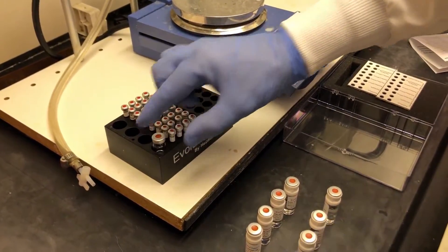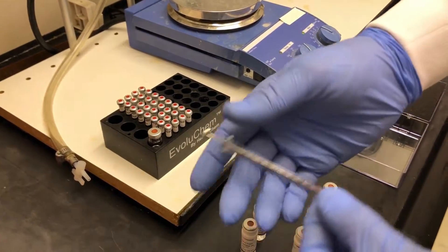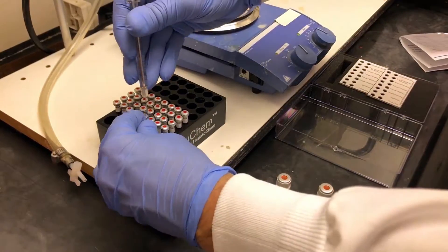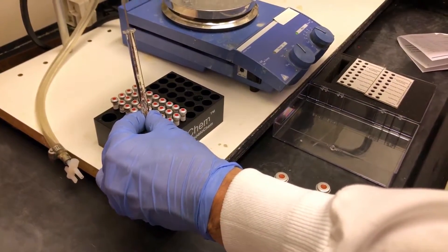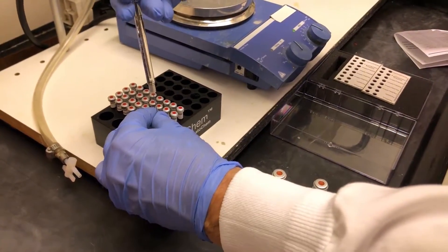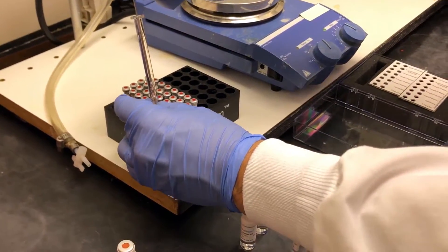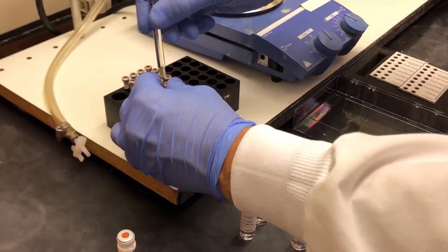Make sure that your substrate is in solution and then transfer 100 microliters into the catalyst vials in the reaction block. Continue adding the substrate solution to each of the eight catalysts in all four columns.